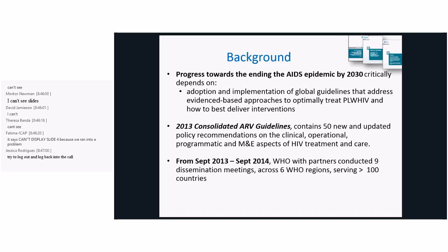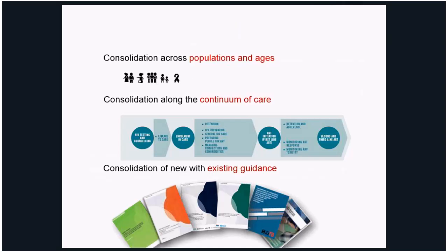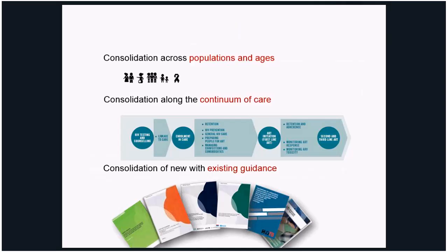Some of the key features of the 2013 guidelines in terms of clinical recommendation were earlier treatment initiation for people living with HIV at less than 500 CD4, with specific subsets of the population prioritized. We also recommended starting treatment regardless of clinical or immunological condition in all children less than five years. There was alignment of drug regimens for adolescents with adults, and a key recommendation of starting triple ART in all pregnant and breastfeeding women, with option B and B-plus being recommended.